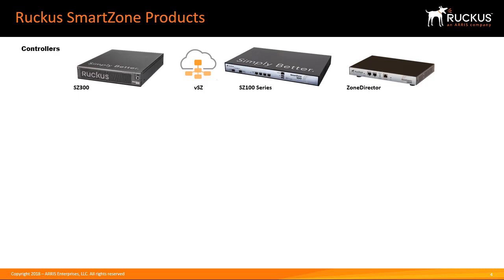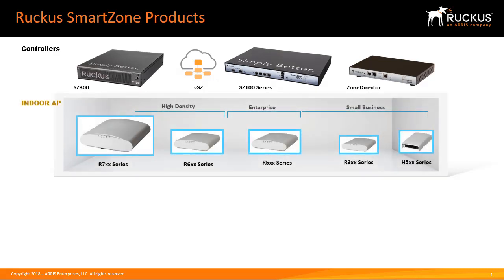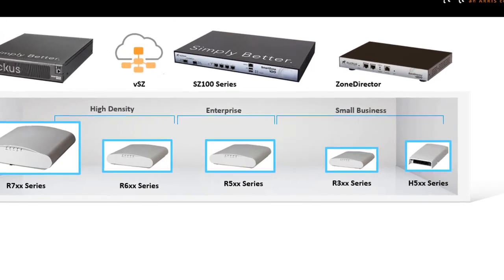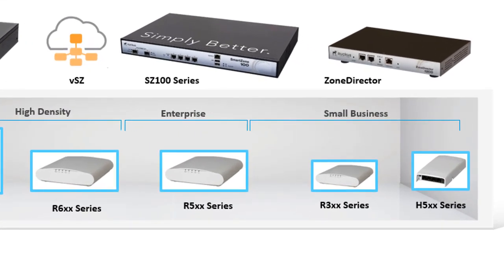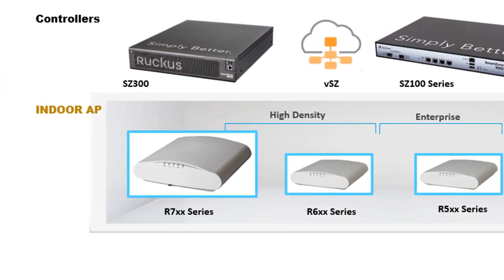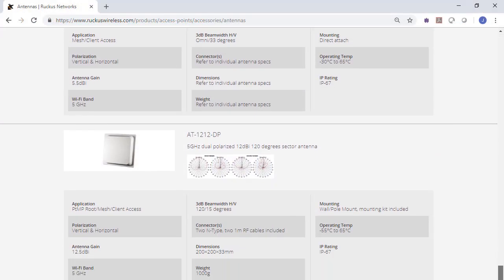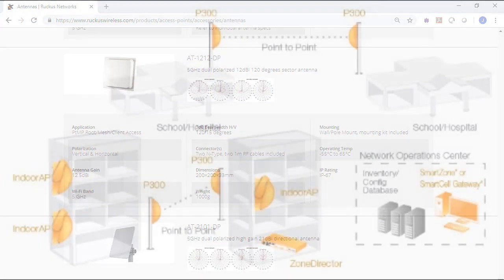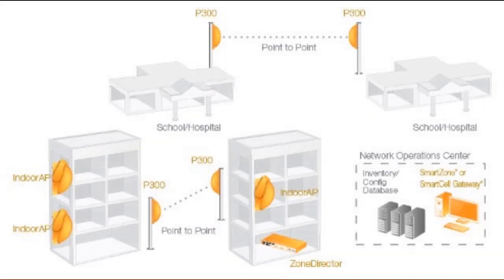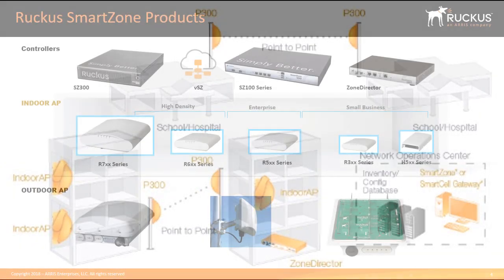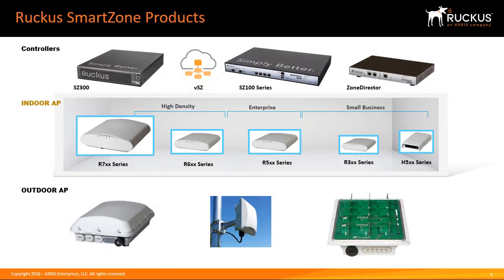The SmartZone controllers manage the Ruckus access points. The Ruckus access point product line offers a solution for every deployment scenario, from small business wireless LANs to mission critical high density carrier grade installations. The outdoor access points are designed for outdoor use in a range of environments, offering a choice of mounting and antenna options. Outdoor point-to-point bridges provide connectivity between remote sites. For a full overview, please refer to the Ruckus website for more details.